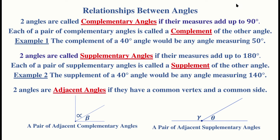Two angles are called complementary angles if their measures add up to 90 degrees. Each of a pair of complementary angles is called a complement of the other — it's a mutual relationship. The complement of a 40° angle would be any angle measuring 50°. Two angles are called supplementary angles if their measures add up to 180 degrees. The supplement of a 40° angle would be 140°, because 40 plus 140 equals 180.